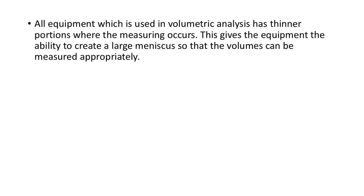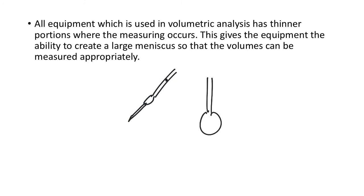All equipment used in volumetric analysis has thinner portions where the measuring occurs. This gives the equipment the ability to create a large meniscus so volumes can be measured accurately — that's why burettes have a skinny part, as do volumetric flasks, so you can get a clear meniscus to measure properly.